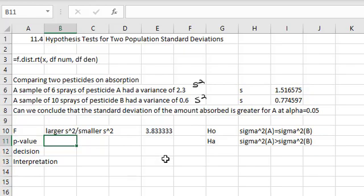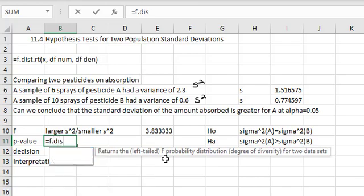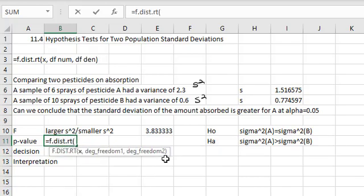We can quickly calculate our p-value by saying equals F dot dist dot rt for right tail. Forces everything to be right tail in this type of hypothesis test. Our test statistic, I can just click the 3.833, comma,